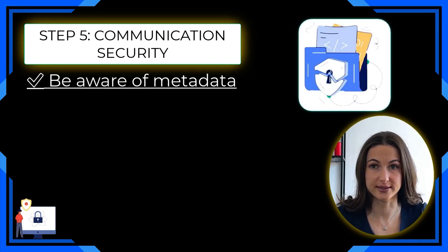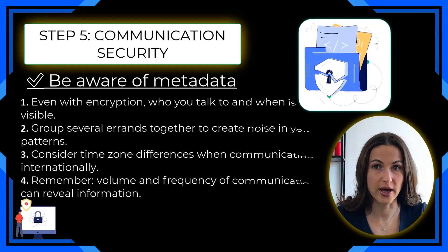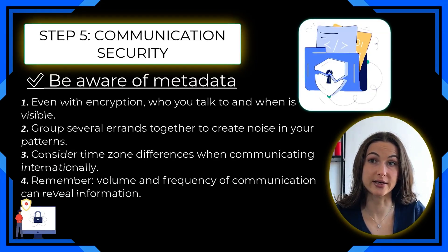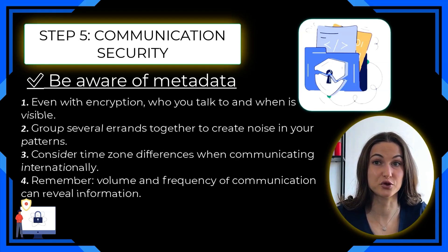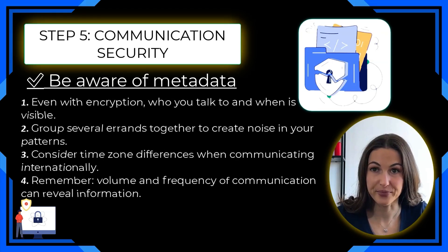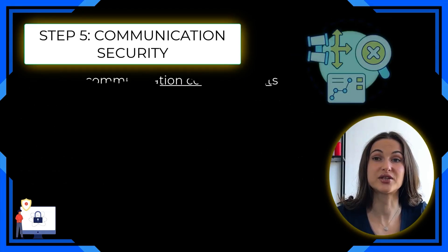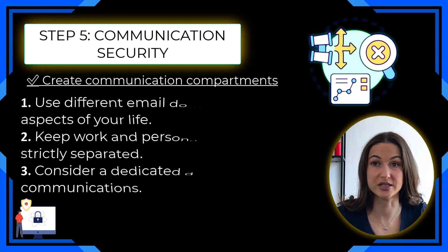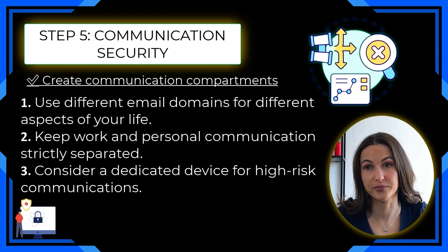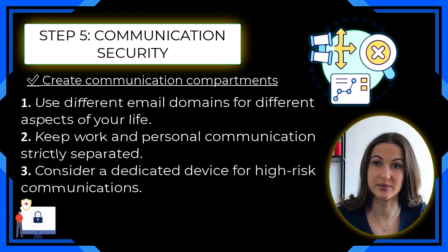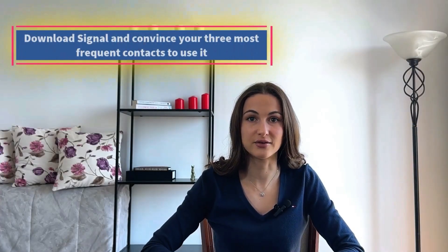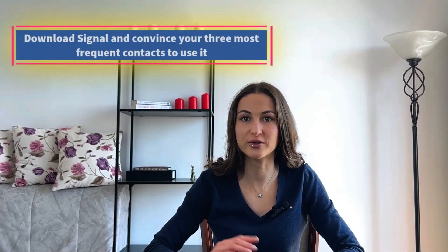Next, be aware of metadata — even with encryption, who you talk to and when is visible. Group several communications together to create noise in your patterns, and remember that volume and frequency of communication can reveal information. Consider time zone differences when communicating internationally. Create communication compartments: use different email domains for different aspects of your life, keep work and personal communication strictly separated, and consider a dedicated device for high-risk communication. Your immediate action item: download Signal and convince your three most frequent contacts to use it.